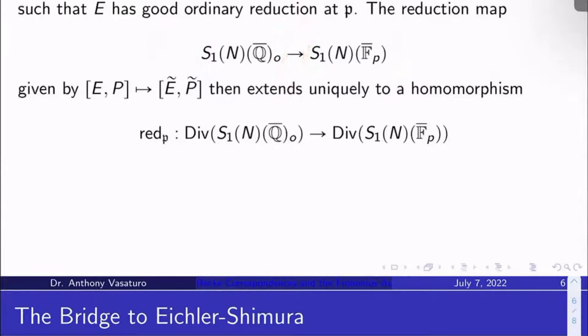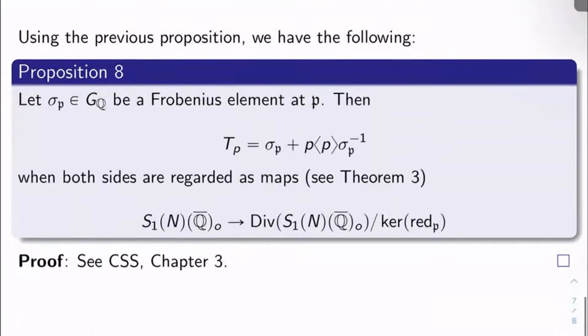Here's the bridge to Eichler-Shimura. So here's the second main result of the day, proposition 8. The reason I gave you proposition 7 was A, it's neat, and B, it's actually used in the proof of proposition 8 here.